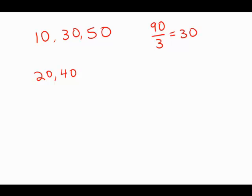Now, this average, 30, is 5 more than the average of 20, 40, and the missing number. So those numbers have an average of 25.